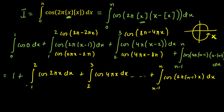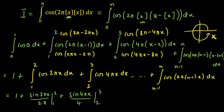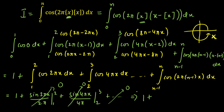Now integrating: we get 1 plus [sin(2πx)/(2π)] from 1 to 2, plus [sin(4πx)/(4π)] from 2 to 3, and so on through the last term. The first term is 1. For every subsequent term, substituting the upper and lower limits gives sine evaluated at integral multiples of π, which is always 0. For example, sin(4π) − sin(2π) = 0, and sin(12π) − sin(8π) = 0. All remaining terms vanish, so the total is 1 plus 0 plus 0 plus ... = 1. So the final answer is 1.